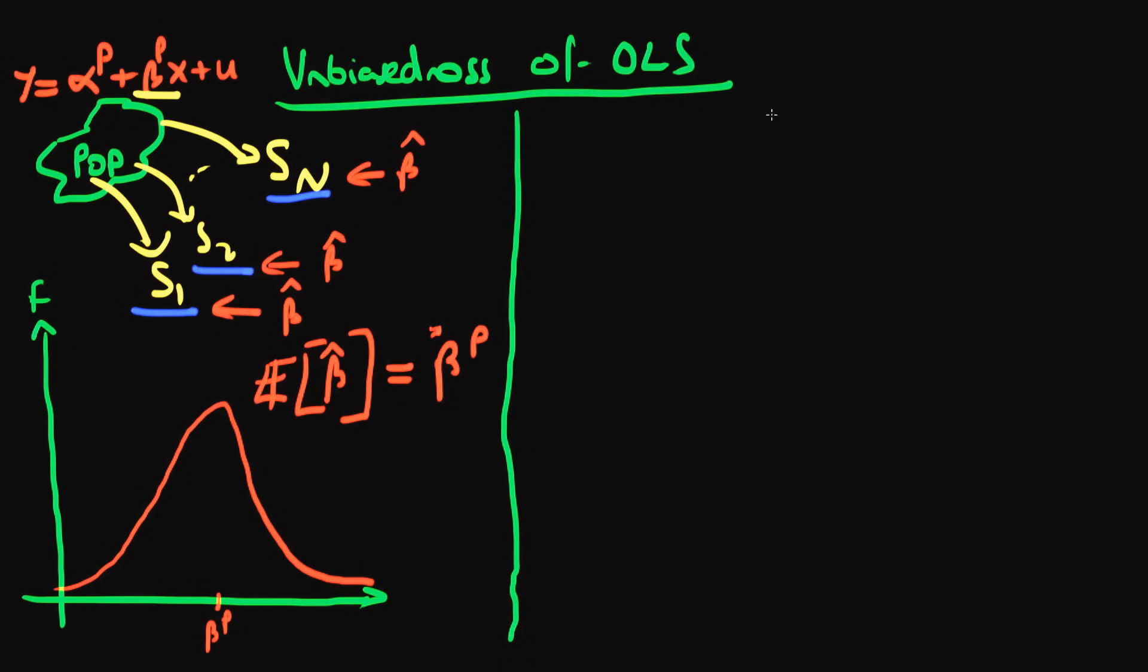Now let's think about unbiasedness in the context of least squares estimators. First of all, I just want to make clear that this isn't a dot on top of the beta p here. It's just something I crossed out. So don't confuse that for anything else.